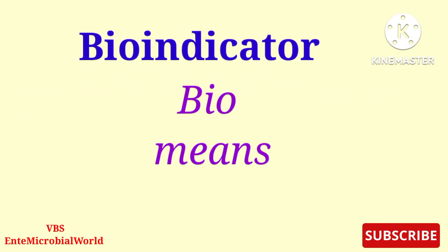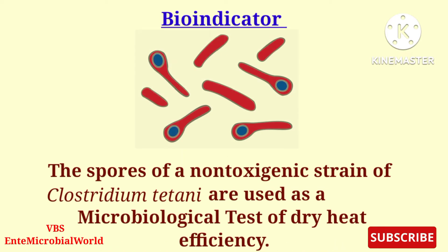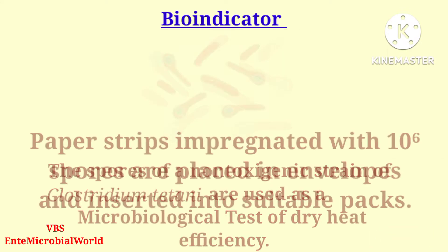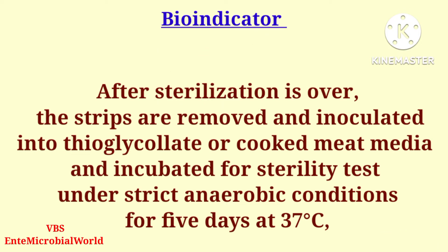First, we are going to look at bio indicators. Bio means life, and here we are using highly resistant microorganism spores as an indicator. The spores of a non-toxigenic strain of Clostridium tetani are used as a microbiological test of dry heat efficiency. Paper strips impregnated with 10 to the power of 6 spores are placed in envelopes and inserted into suitable pads.